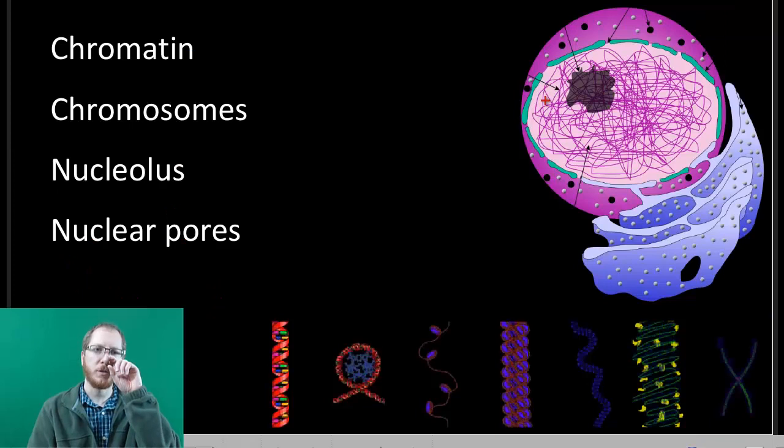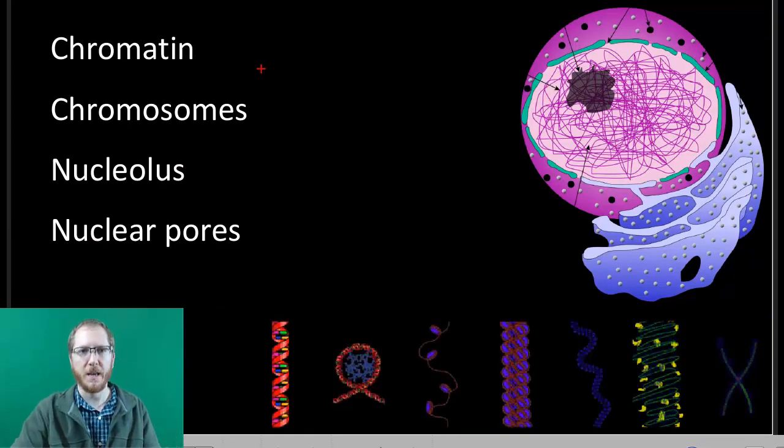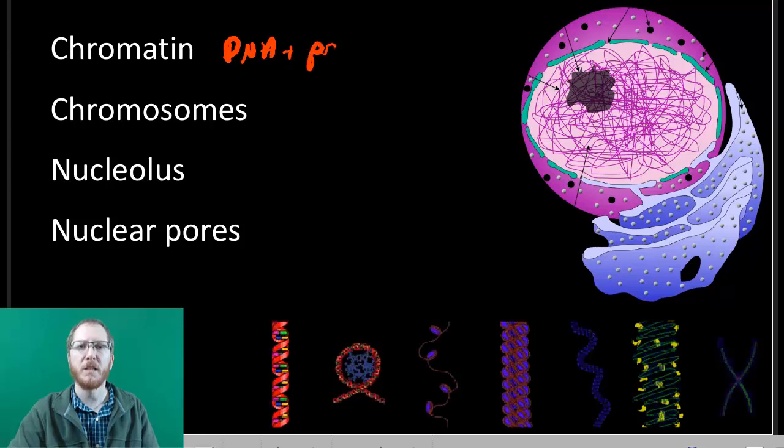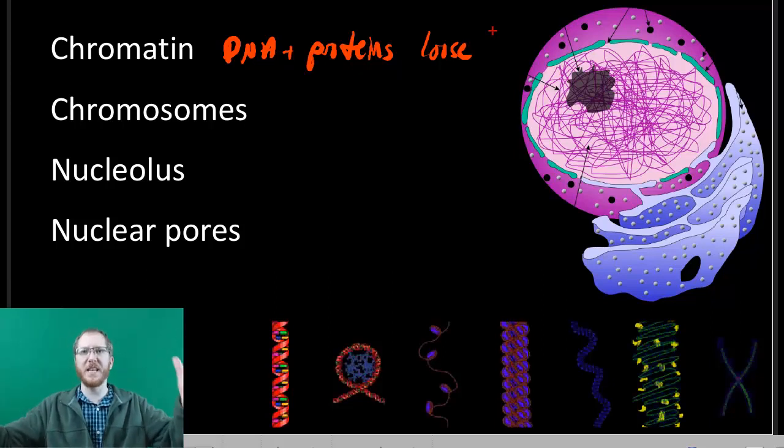Now I want to real quick just go through a couple things in a little bit more detail. So chromatin, I want you to realize, is going to be DNA plus proteins, but it's going to be in a format that's loose. So this is like your house where all your stuff is just sitting out on bookshelves. It's sitting, you know, if it's like clothes, probably in a pile on your floor.